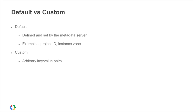Metadata is divided into default and custom metadata values. Default metadata is defined and set by the metadata server — you cannot change the default metadata values. Examples include the project ID, the instance zone, and the instance hostname. On the other hand, custom metadata allows you to define arbitrary string key-value pairs for your instance or project.